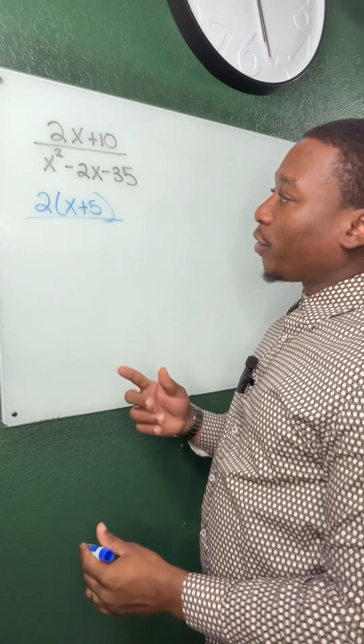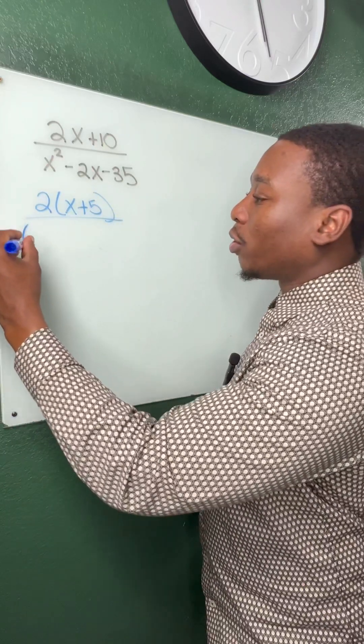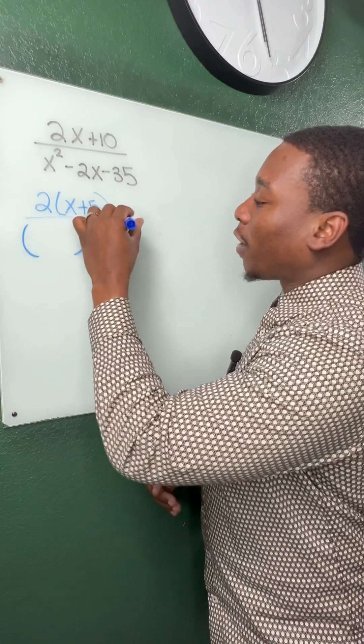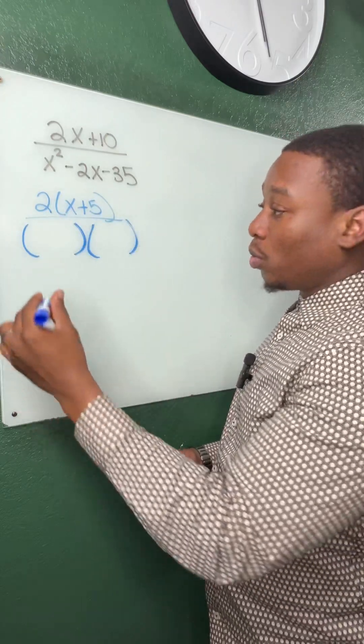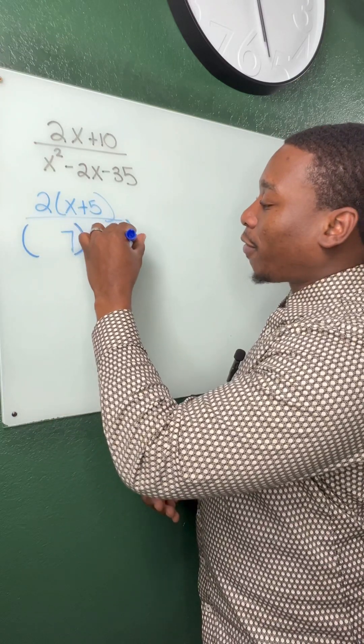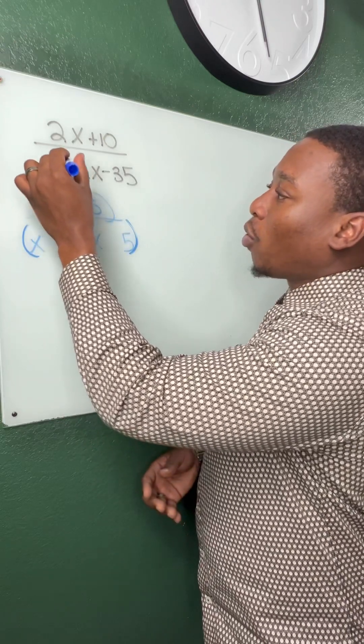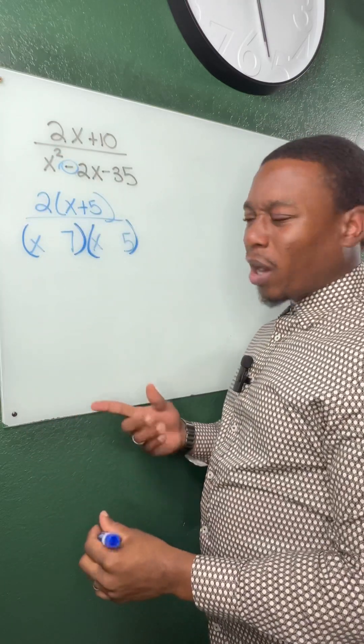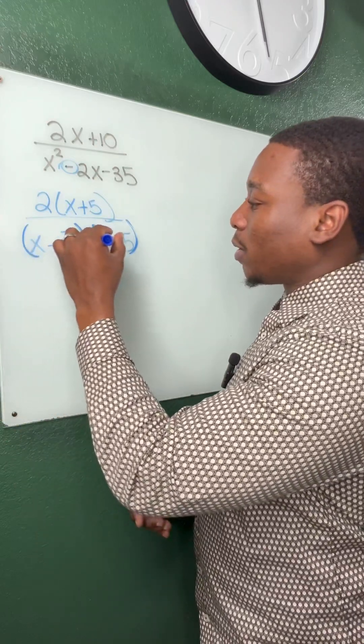Now the denominator, we factor. We know it's going to multiply to give us 35. And when we add the factors, it gives us a negative 2. So I know 7 and 5 are going to be those two numbers. And if I want a negative when I combine, my larger number, 7, has to be negative.